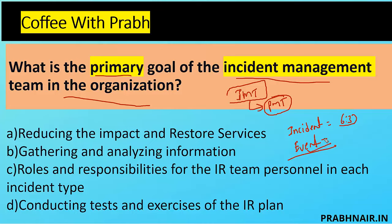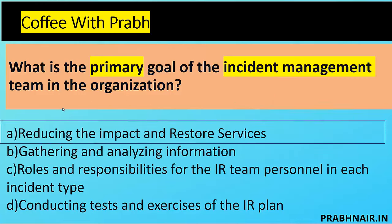Option A is reduce the impact and restore services — makes sense. Option B is gathering and analyzing information — that's a process, not the primary goal. Option C is roles and responsibilities for the IR team — that's one function of the incident management plan. Option D is conducting tests and exercises — a goal, but not the primary one. The ultimate goal is A: reduce the impact and restore services. They achieve this by gathering requirements, having effective roles and responsibilities, and testing the plan regularly.